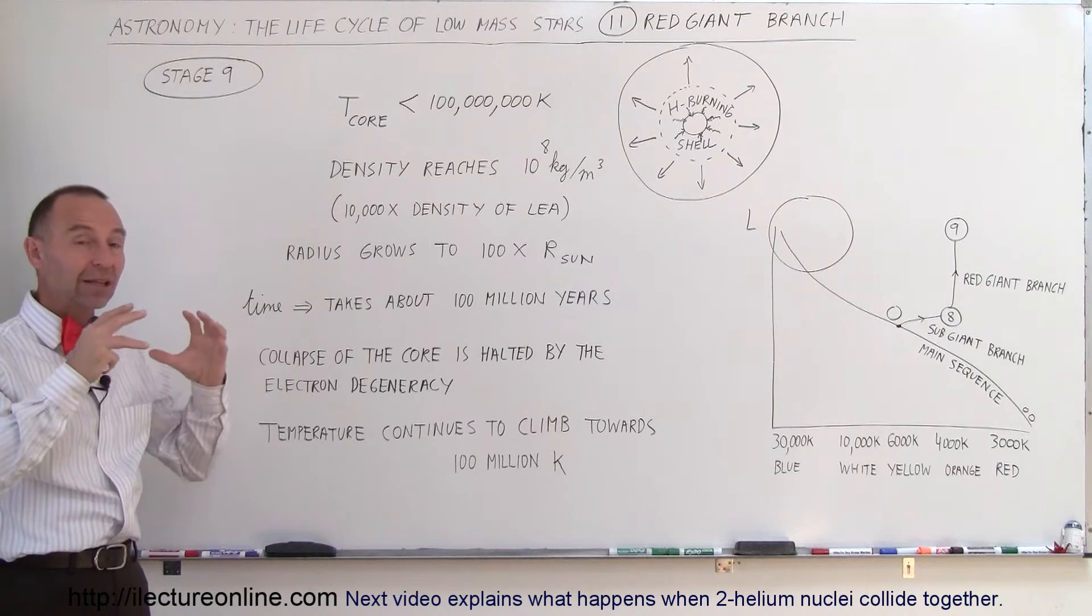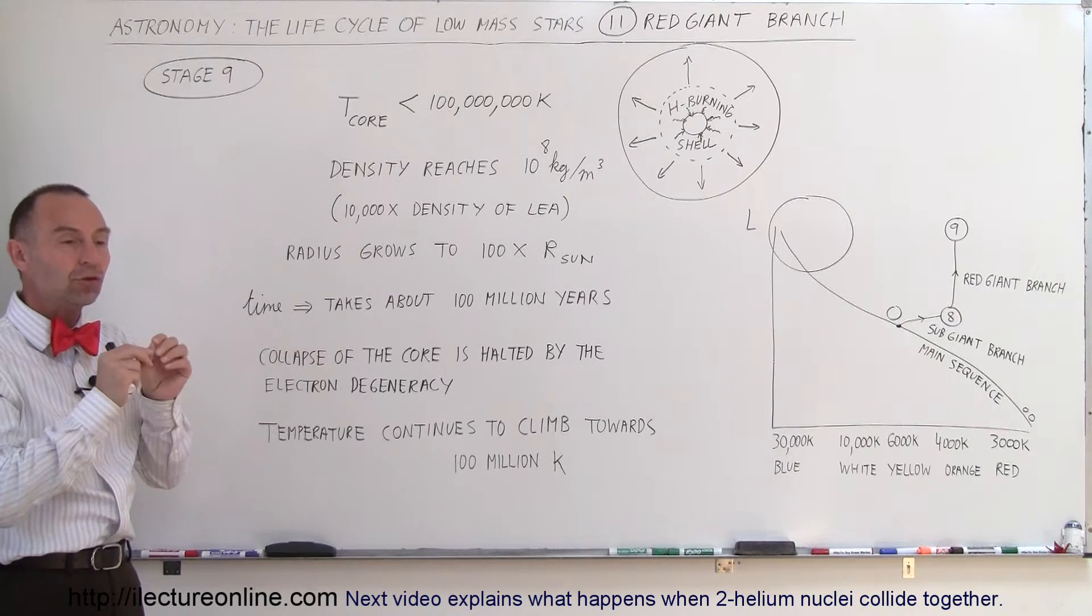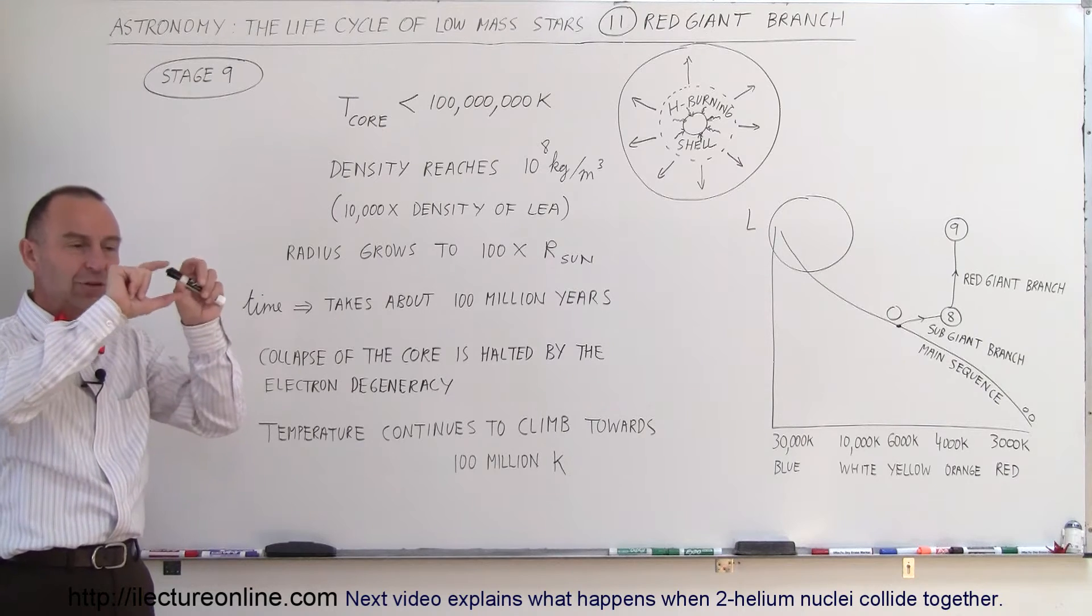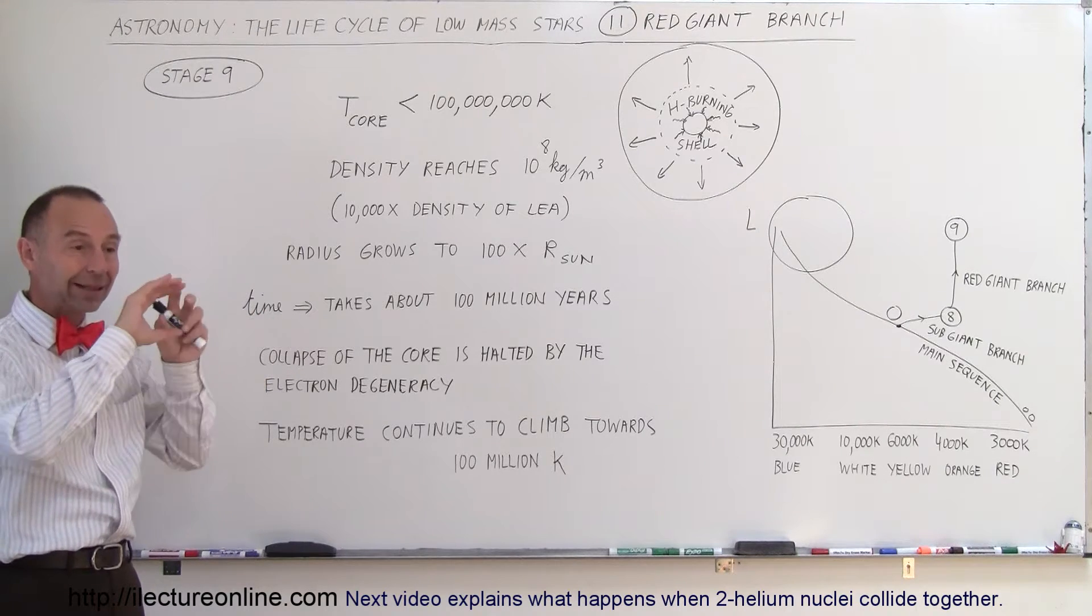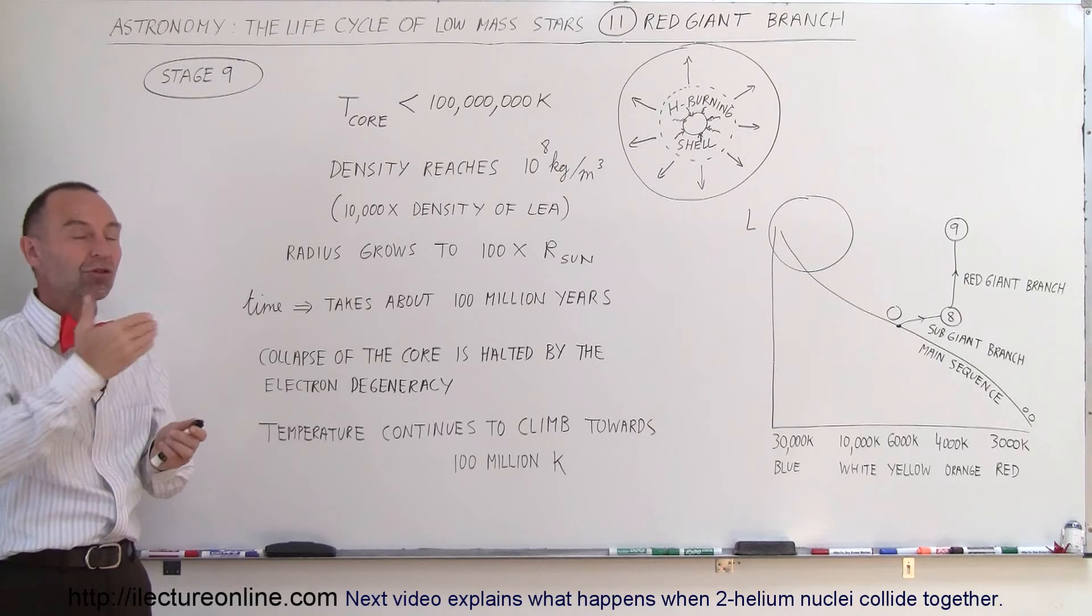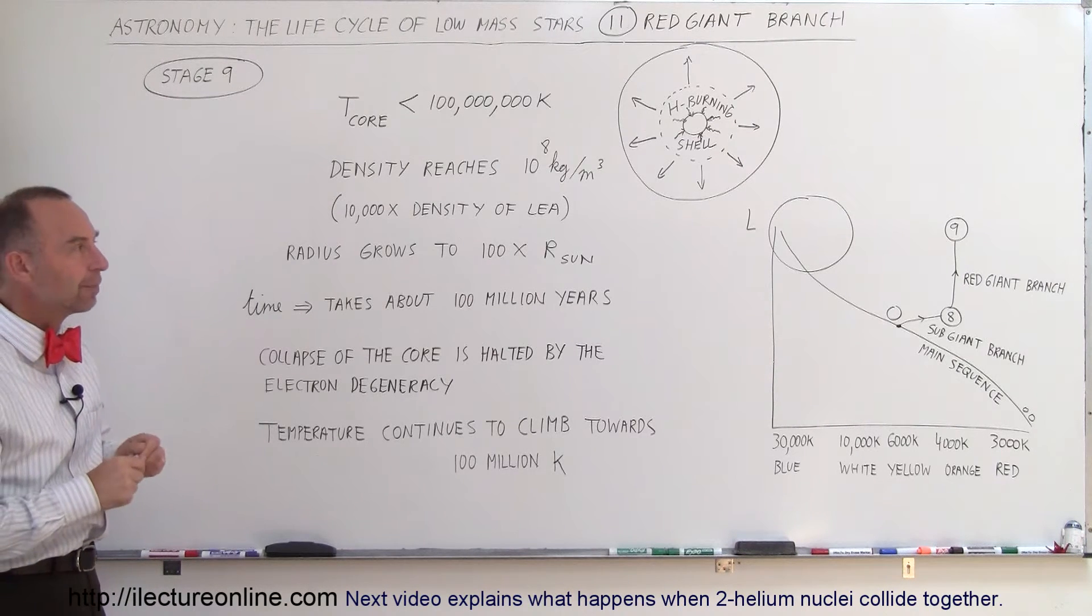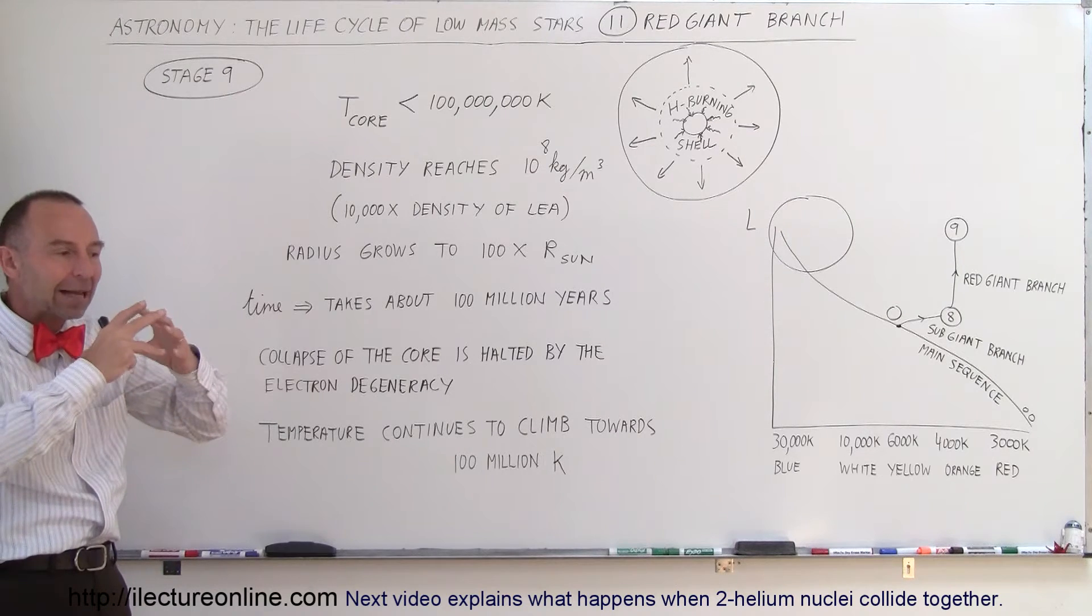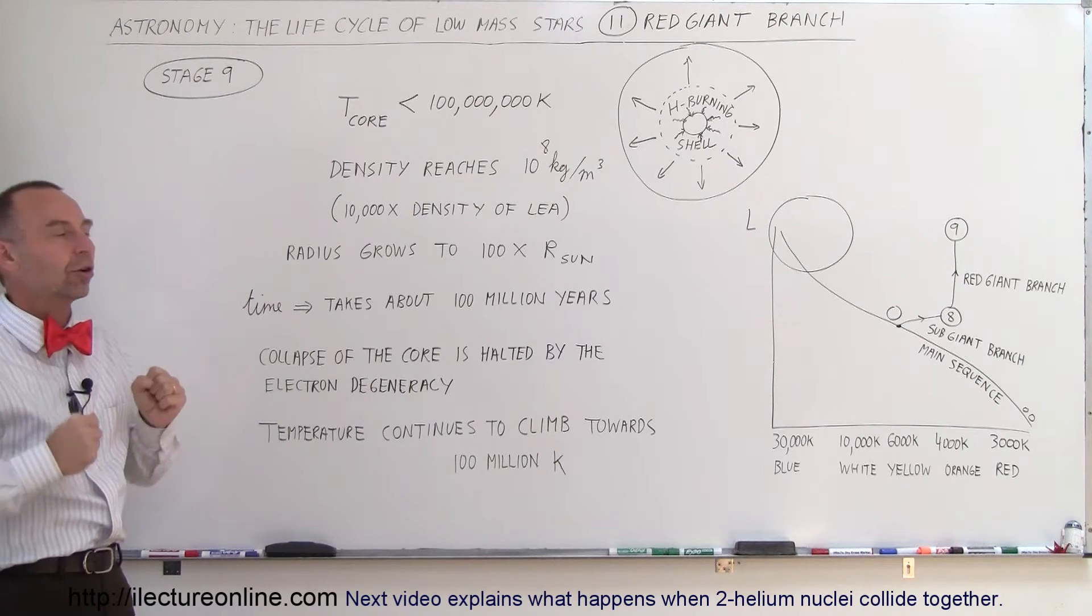The core began to collapse. That additional heat began to fuse, gave enough heat to the layers around the core. For those layers, it's called the shell around the core, for that shell to begin to burn hydrogen into helium. That additional heat began to expand the star into a larger and larger star.